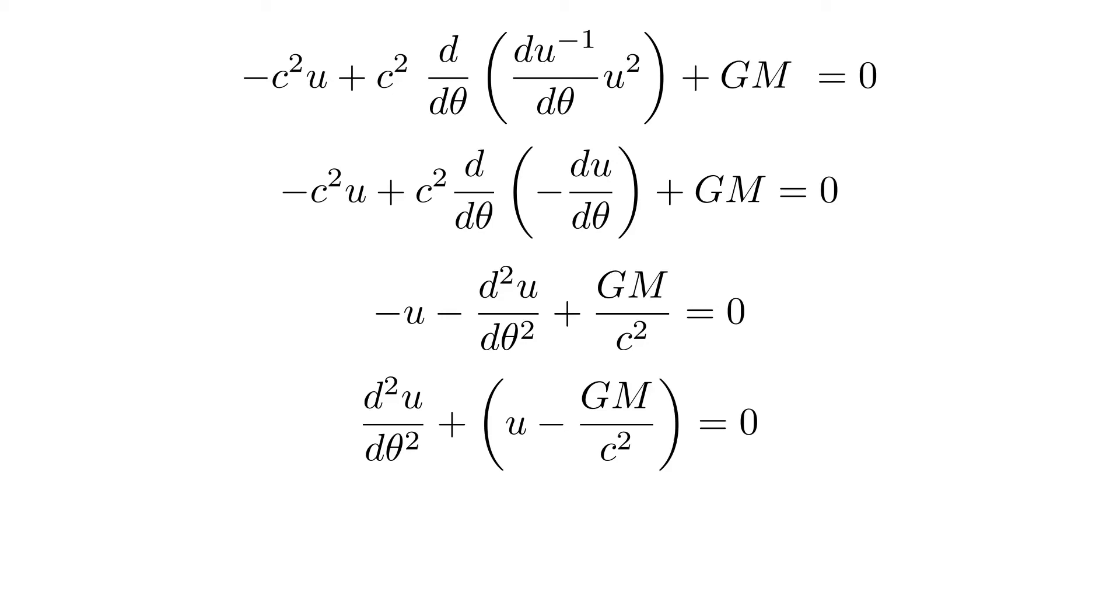Since the derivatives of constants are 0 anyway, we can rewrite the second derivative of u as the second derivative of u minus GM over c squared. This, by my previous video, can be solved.